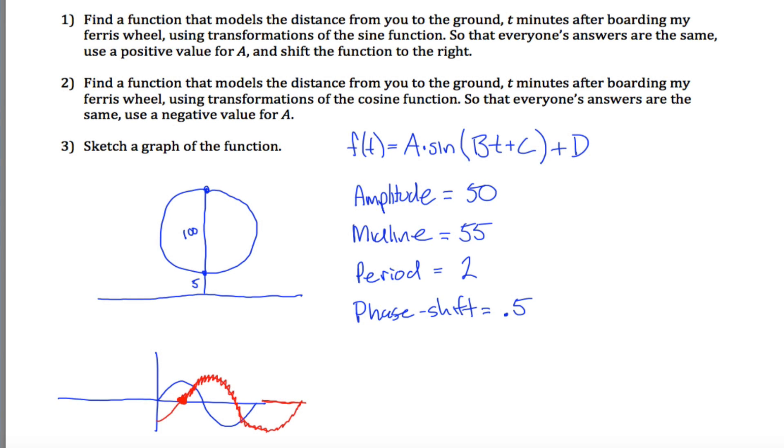To come up with this function, first the amplitude, A here is not the amplitude. It's the absolute value of A that's the amplitude. So you don't know if A is 50 or negative 50. However, I do tell you up here that make A positive, so A equals 50.